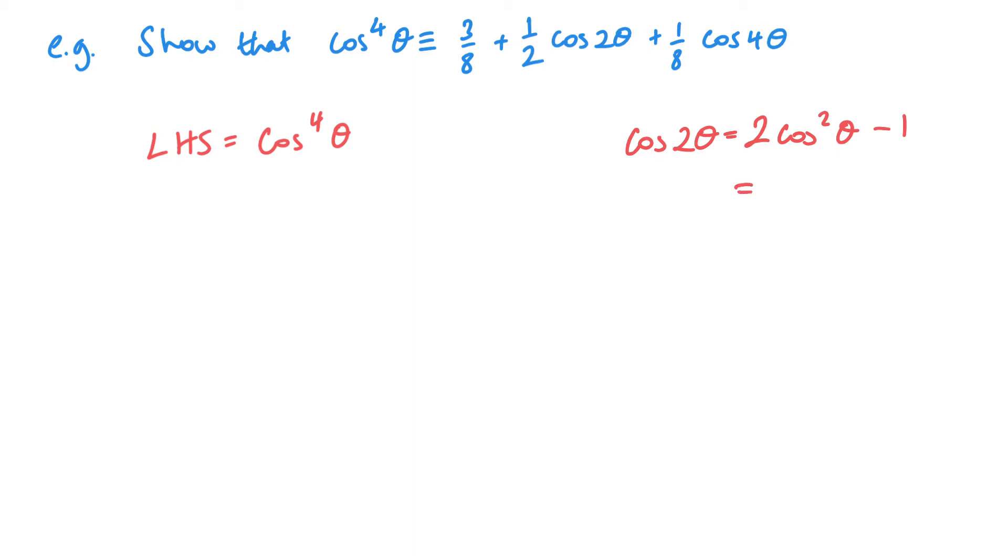And then rearranging this, I'm going to end up with cos squared theta is going to be a half cos 2 theta plus a half. And this is what I'm going to substitute in.